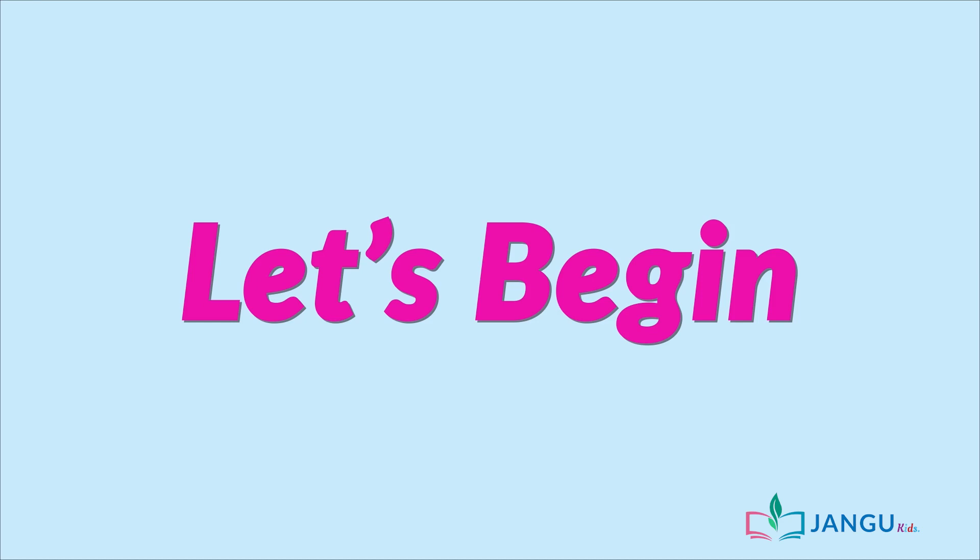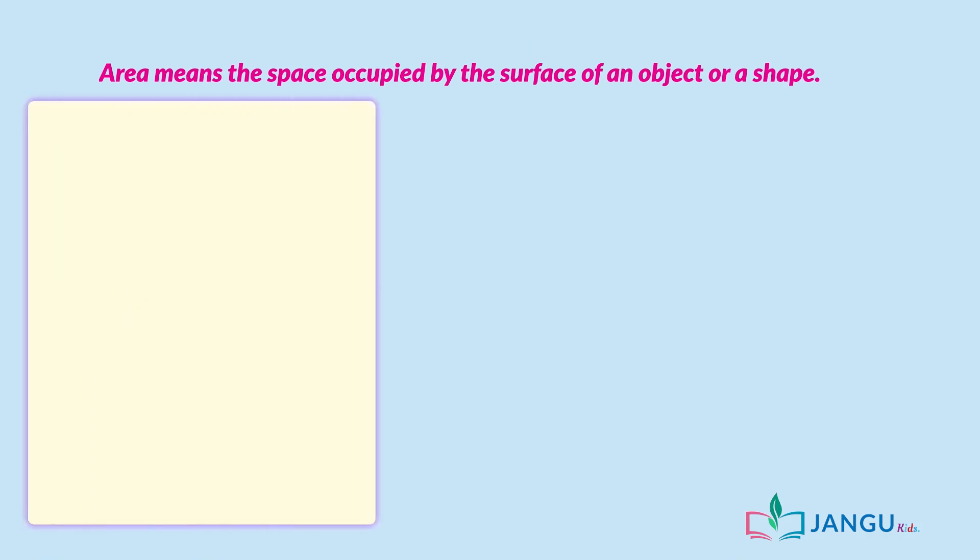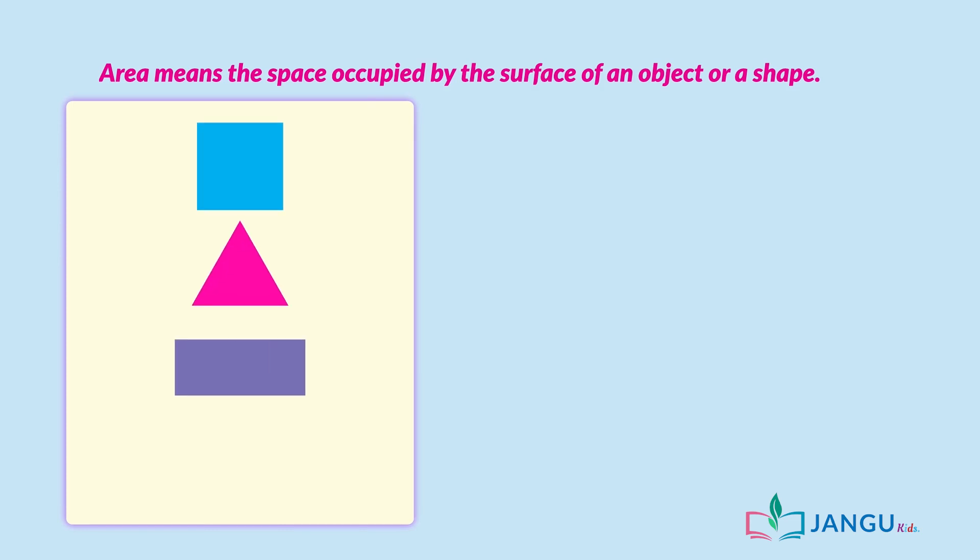First of all, let's find out what Area means. Area means the space occupied by the surface of an object or a shape. Examples of shapes are squares, triangles, rectangles, circles, etc.